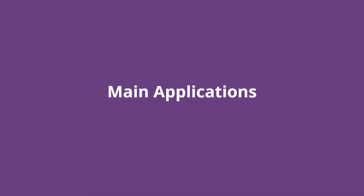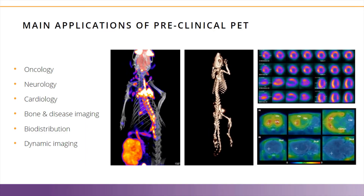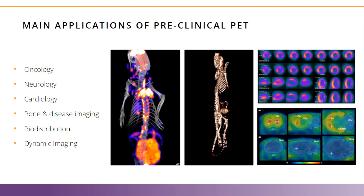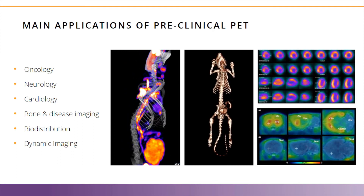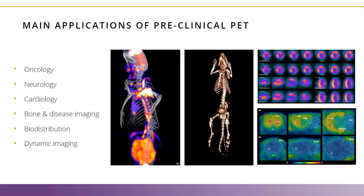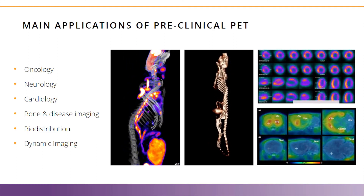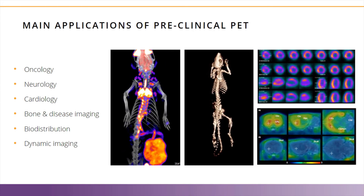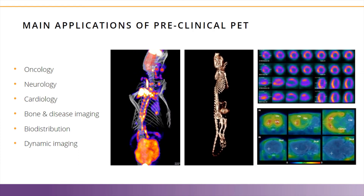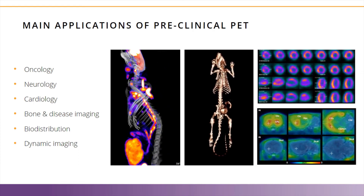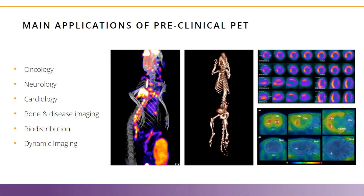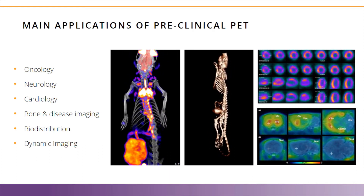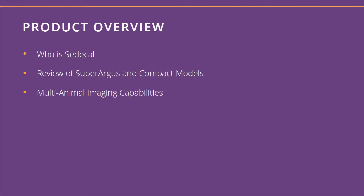Preclinical imaging researchers from oncology, neurology, cardiology, and others have found benefit in using PET to better understand molecular targets or study disease state and progression. Additionally, PET has been used to study biodistribution of specific targets and therapeutic compounds, and dynamic imaging is becoming popular to study the kinetics of tracer migration throughout the imaging subject. I'd now like to shift focus from PET as a modality to CETECAL and the Super Argus systems specifically.